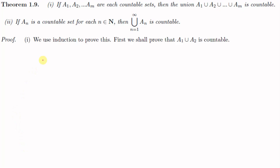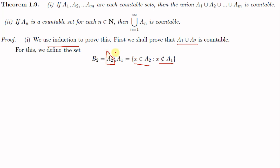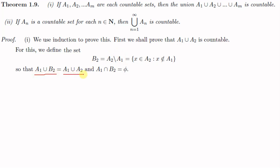We prove the first part by induction. First we show that A1 ∪ A2 is countable. We define B2 = A2 \ A1, the set of all x ∈ A2 such that x ∉ A1. This removes all elements common to both A2 and A1, so A1 ∪ B2 = A1 ∪ A2 and A1 ∩ B2 = ∅. It is sufficient to prove that A1 ∪ B2 is countable.